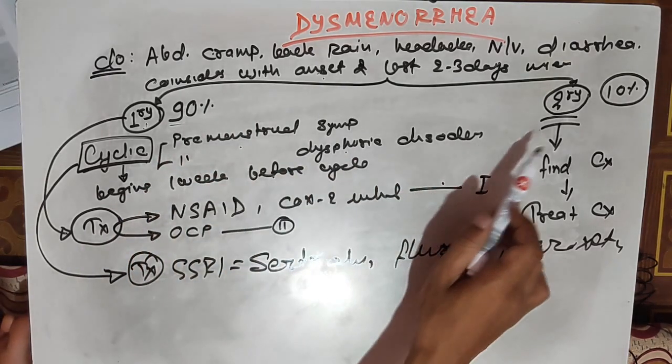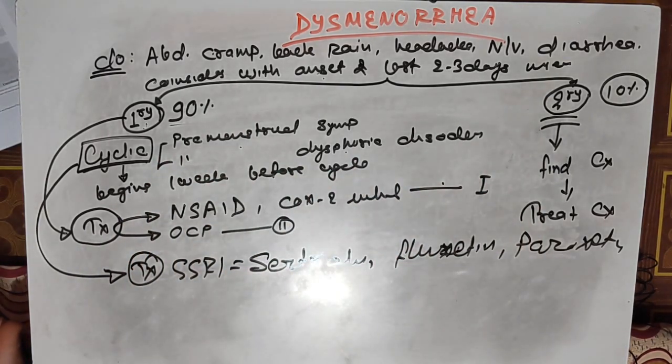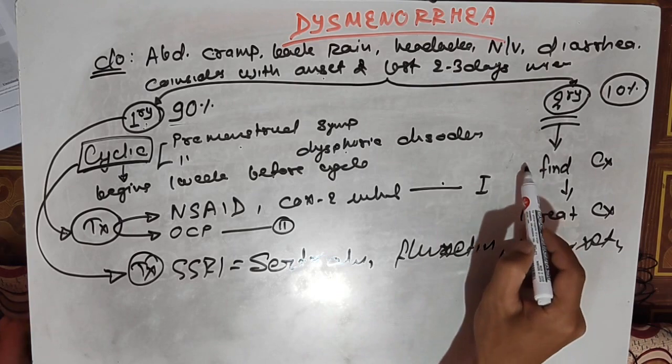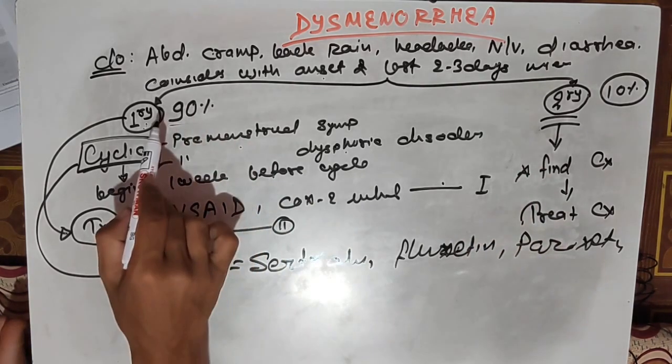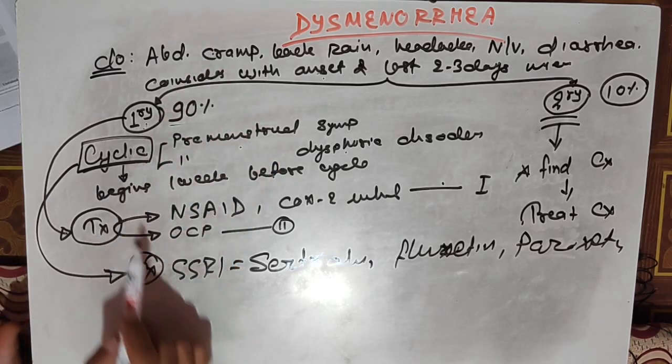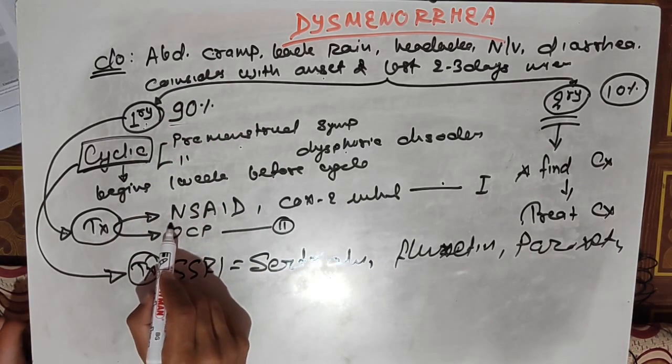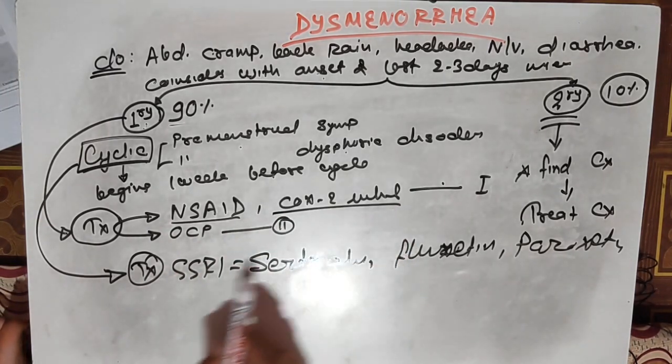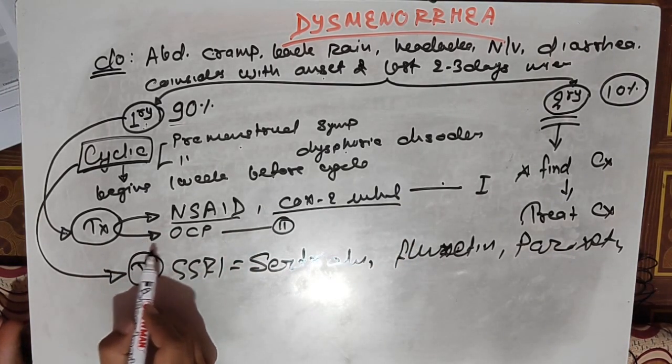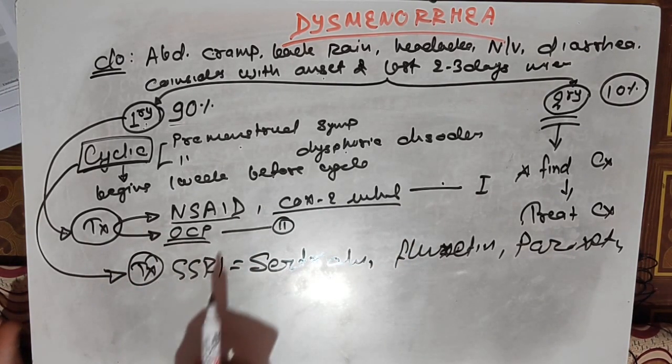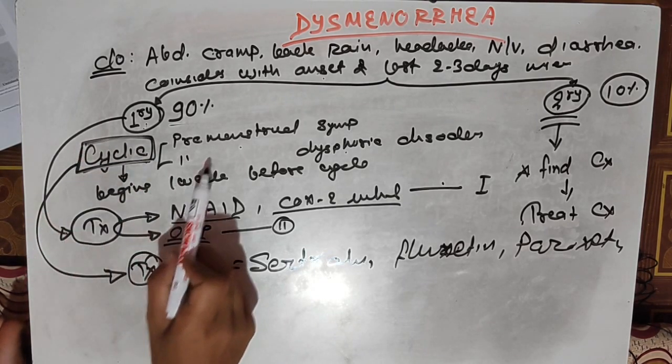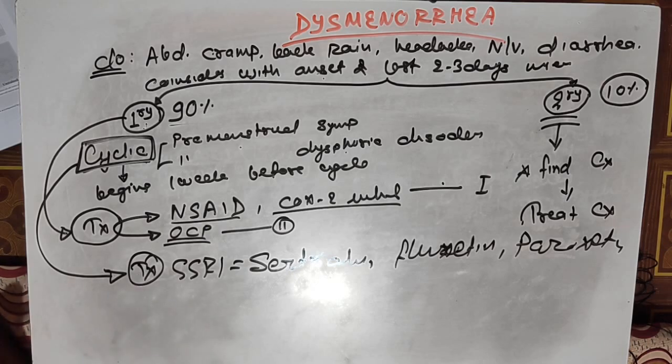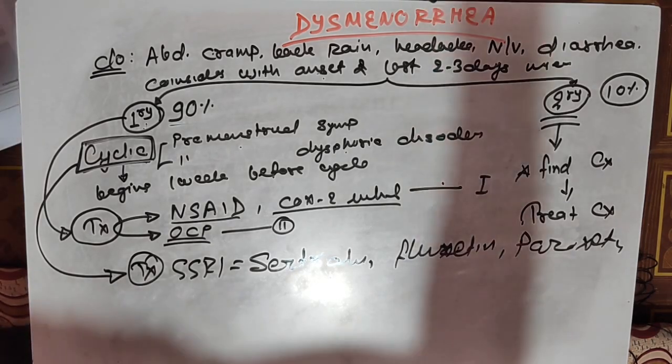and constitutes 90%, and secondary, which has pathology that must be found and treated. For primary dysmenorrhea, first-line management is NSAIDs or COX-2 inhibitors, and second-line is oral contraceptive pills. Some patients also present with depressive symptoms, for which SSRIs are prescribed. Thank you.